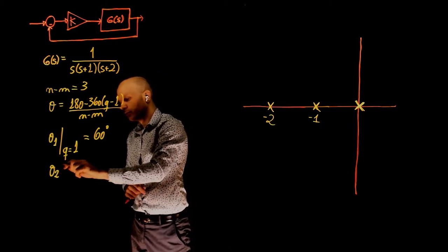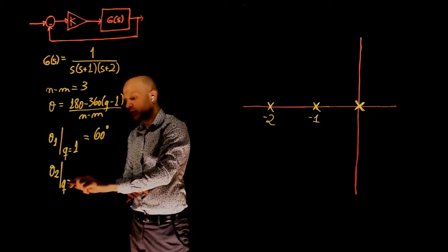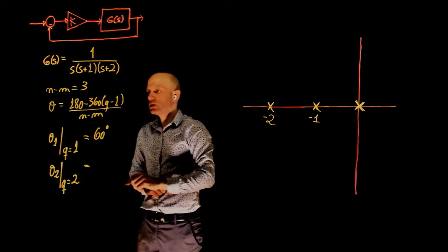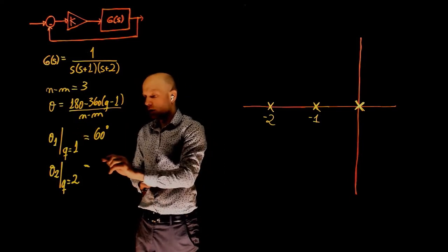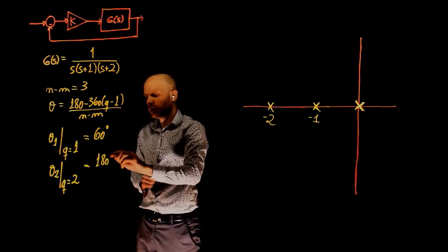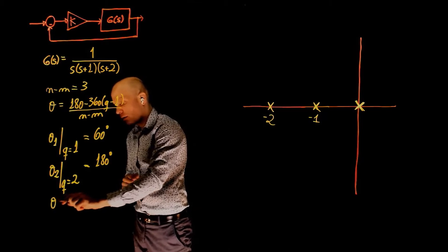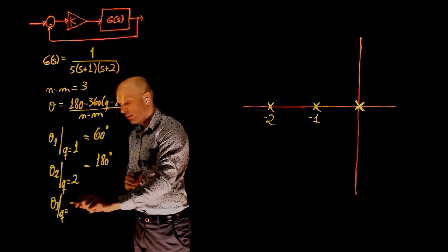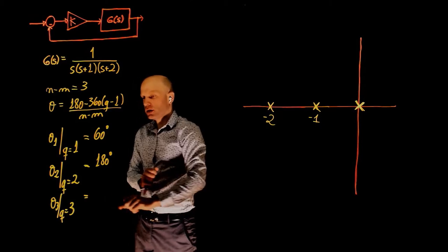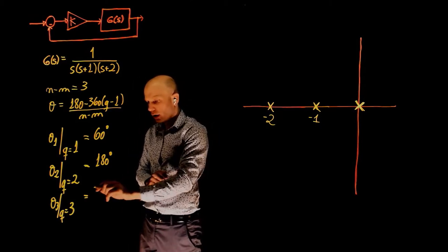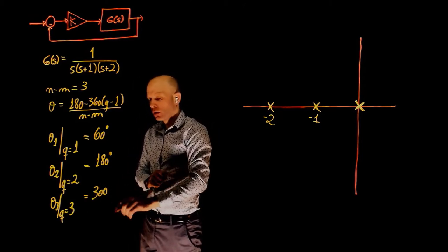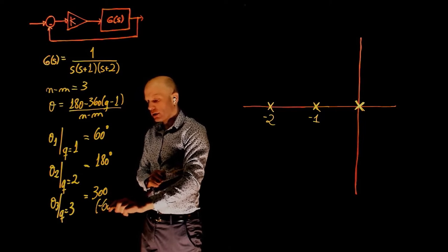Theta 2 is obtained by setting q to 2, and this is, when q is 2 here, we get 180 degrees. Theta 3 takes q equals to 3, and this is 300 degrees or negative 60 degrees.